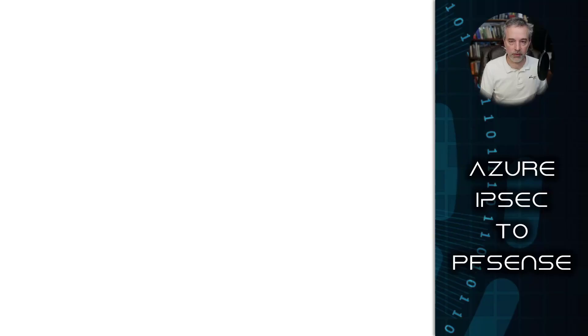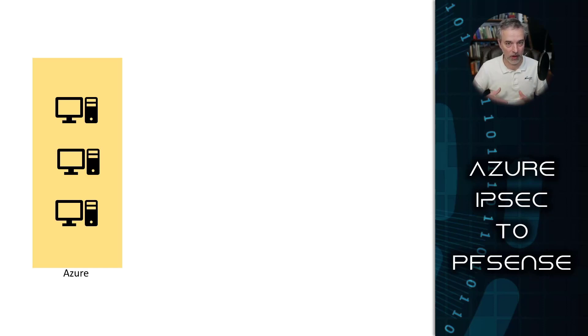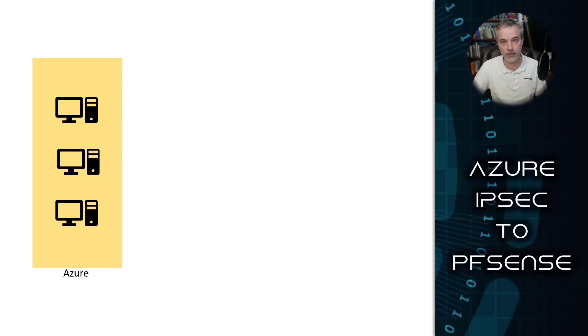I'm going to walk you through the components first, and then show you how to do it in the Azure portal and using PFSense. For this to work, you're going to need Azure with a bunch of resources — that could be virtual machines, SQL databases, or app servers. A virtual machine uses a NIC, and platform-as-a-service resources use private endpoints, but in any case it's all connected to some kind of Azure VNet.